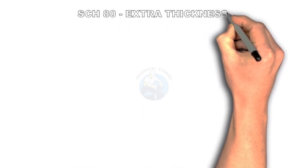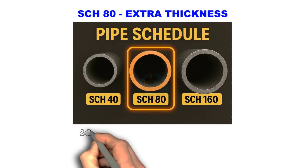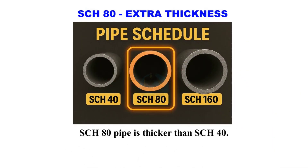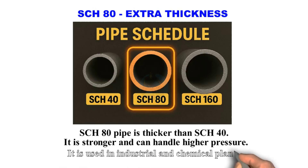Schedule 80 — Extra Thickness. Schedule 80 pipe is thicker than Schedule 40. It is stronger and can handle higher pressure. It is used in industrial and chemical plants.